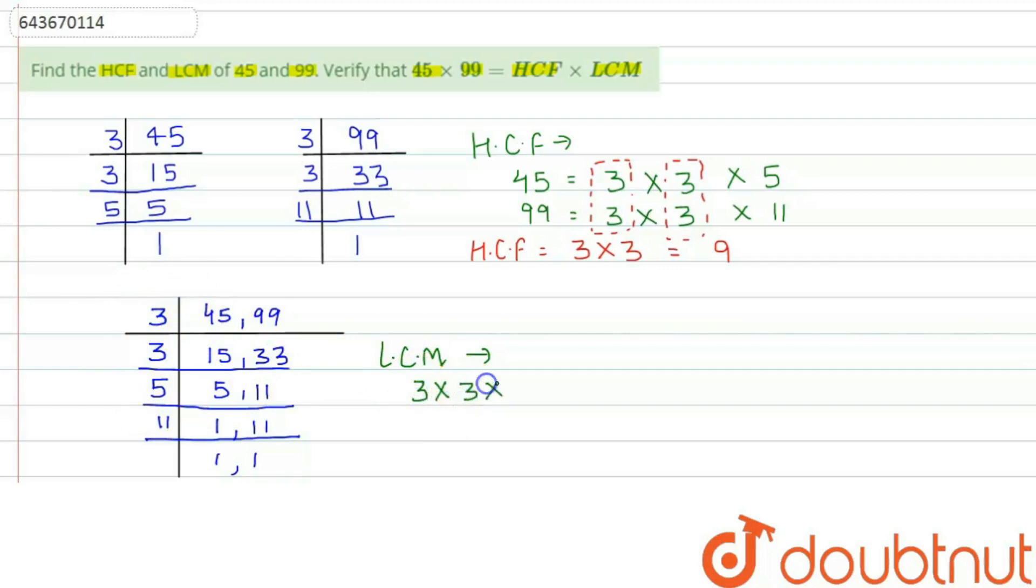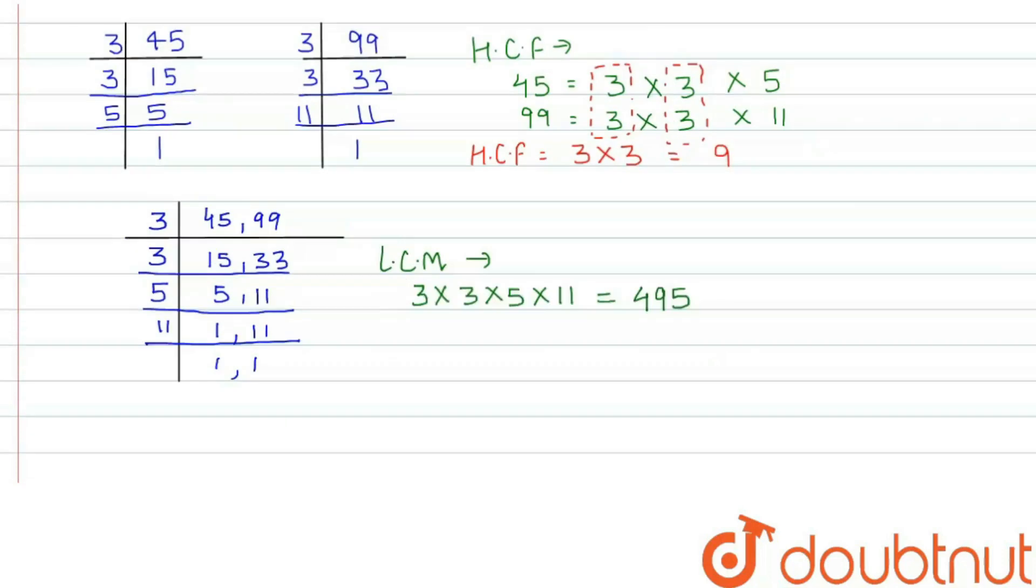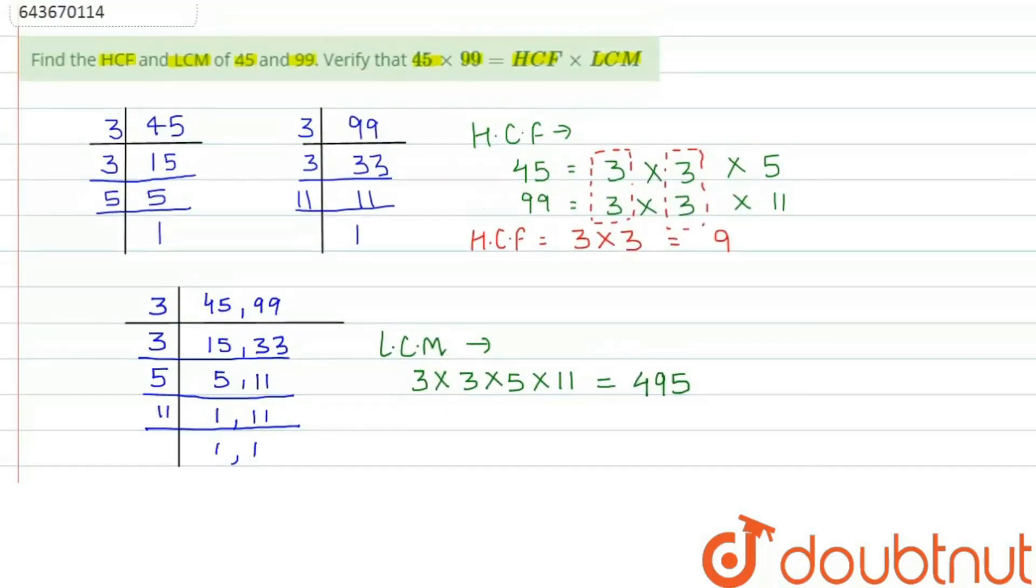For LCM, we will find the product of all of these factors. So that will be 3 into 3 into 5 into 11, which equals 495.